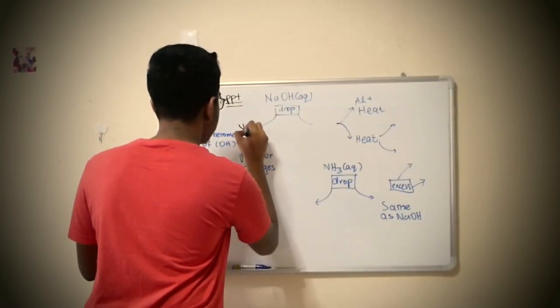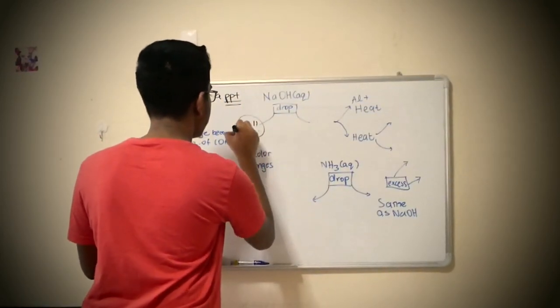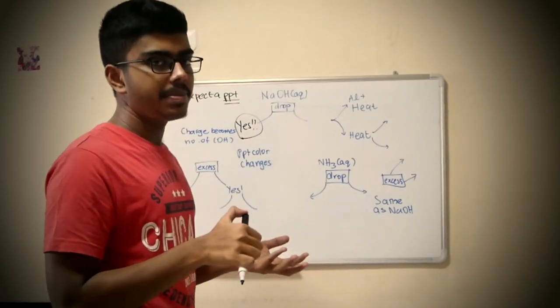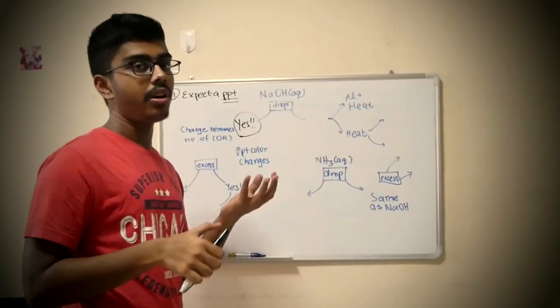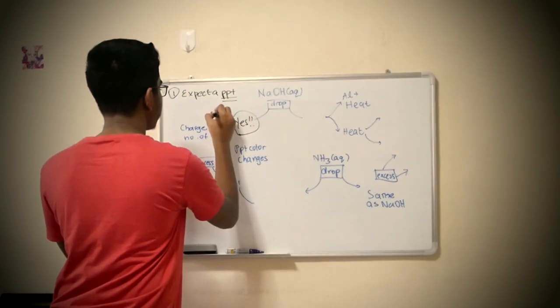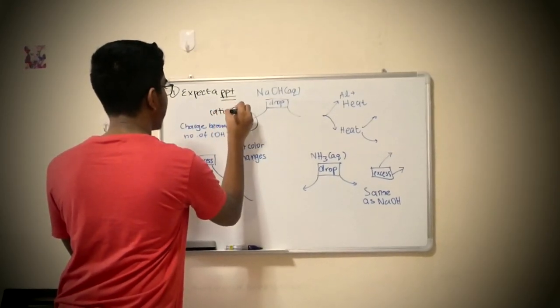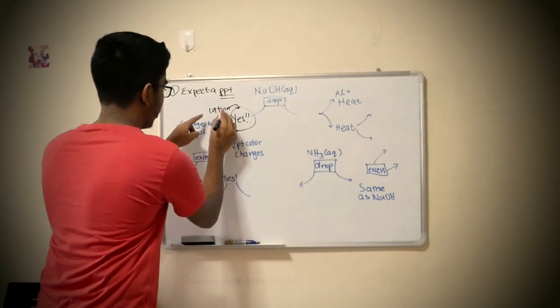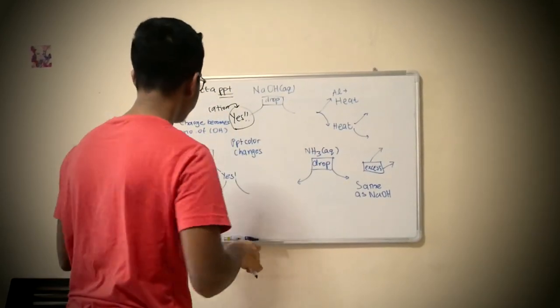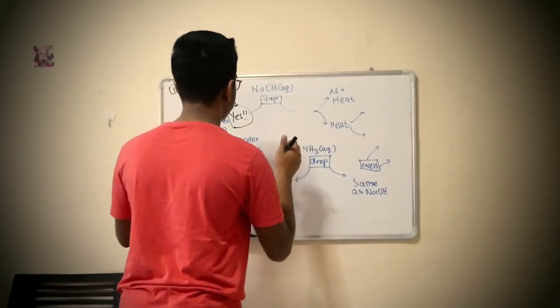One, there is a precipitate. So when there is a precipitate, you are testing for a cation. I believe you guys know what a cation is. So the charge of the cation becomes the number of OH.